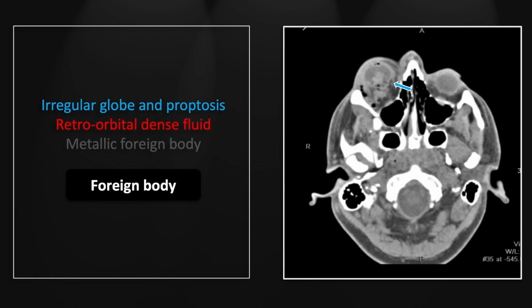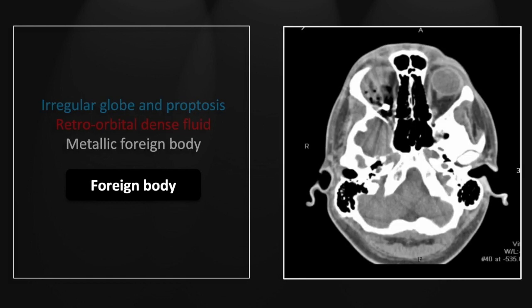There is significant retrobulbar density as well as gas, and significant density within the globe. The lens is entirely disrupted and most likely some of it is displaced posteriorly. Here we see the offending foreign body — the BB — lying in the retrobulbar orbit, and luckily not within the brain itself.